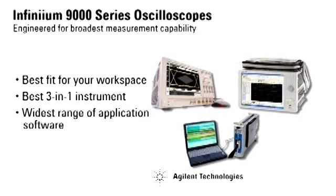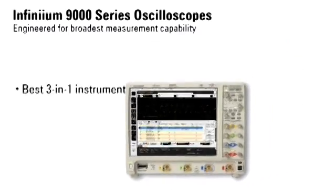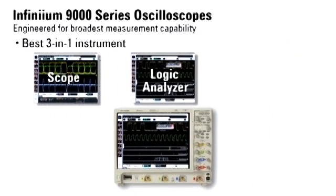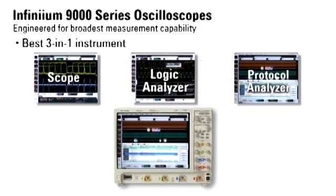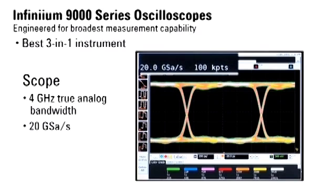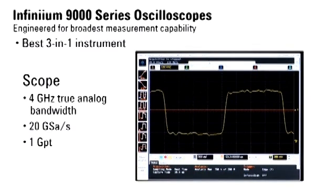Infinium 9000 series scopes offer the power of three instruments in one box. We combine a world-class scope with the timing analysis capability of a logic analyzer and the packet views of a protocol analyzer. Our scope offers true analog bandwidth up to 4 gigahertz with a sample rate of 20 giga samples per second. With up to one giga point of memory, capture long periods of time and zoom in for more detail.